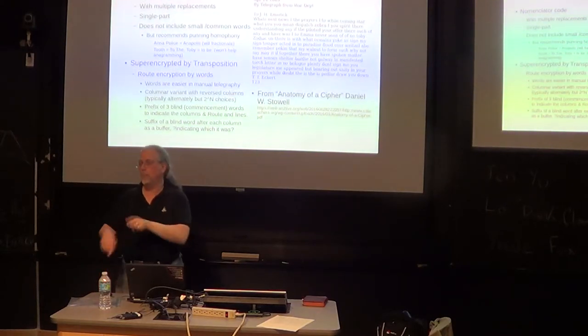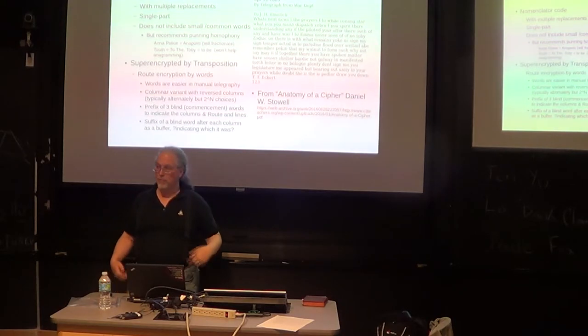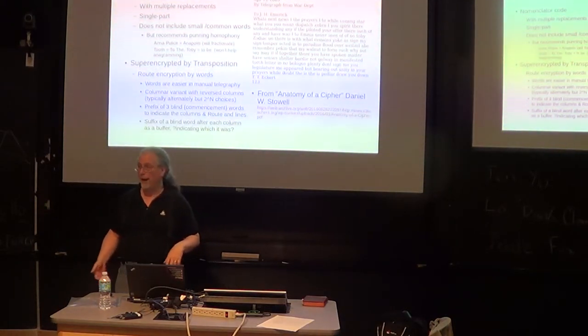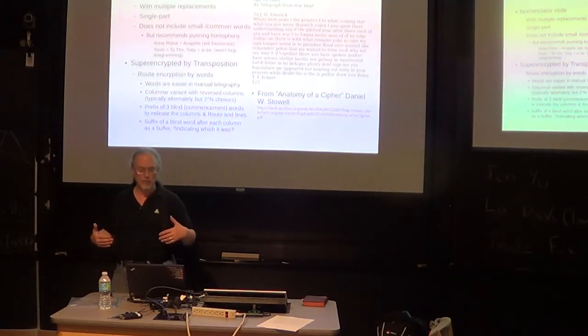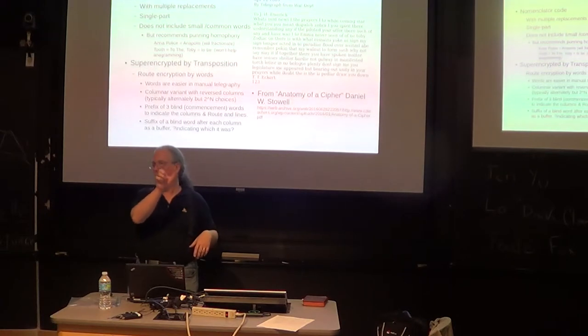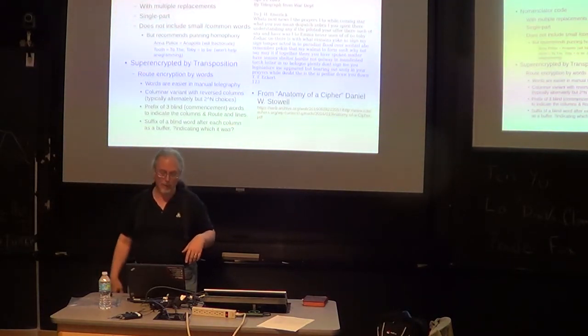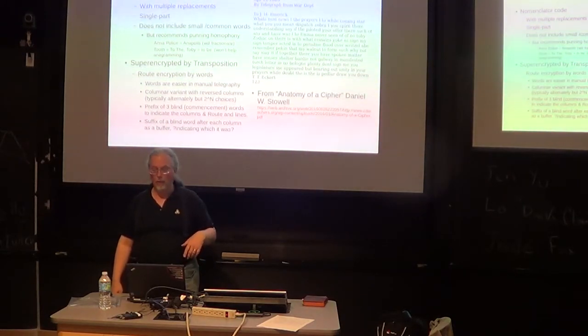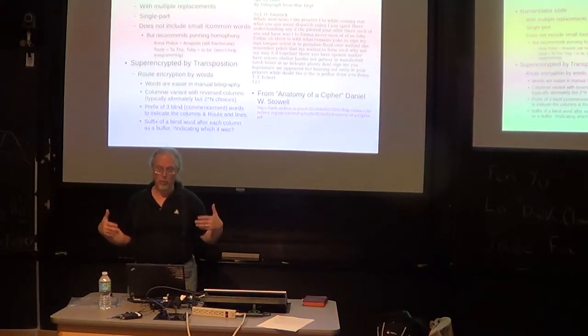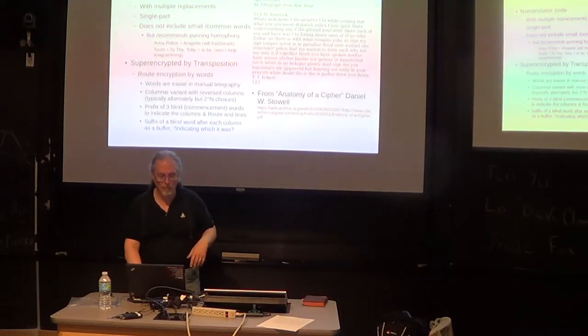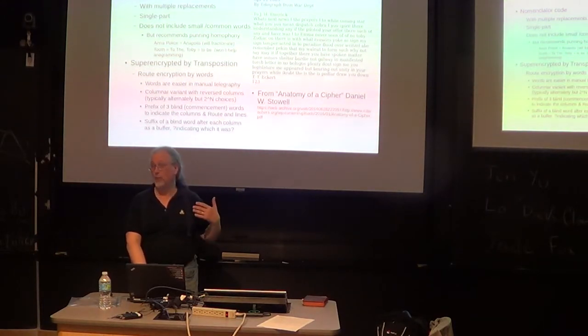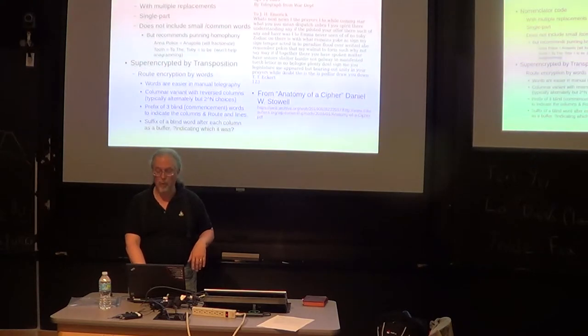Instead of sticking Annapolis right in the message which makes it obvious to somebody that this might be about Annapolis, you have Anna and police in different portions of the message after it's been scrambled. So they used the code words and then super encrypted by a transposition, what's called a route cipher, which is to say the words were written in and then read out by columns, sometimes up sometimes down. They also had special code words that indicated the size and the route tucked into the message. And they also marked at the end of each column to show you that you've gotten it right and where the ends of the columns were.